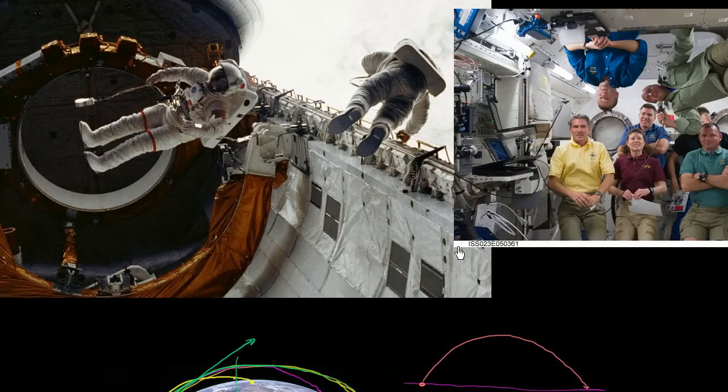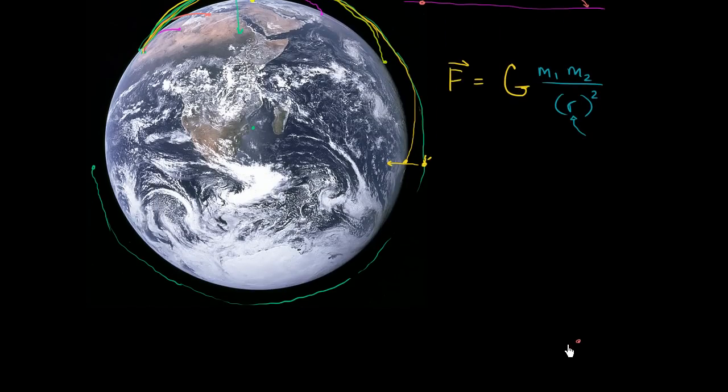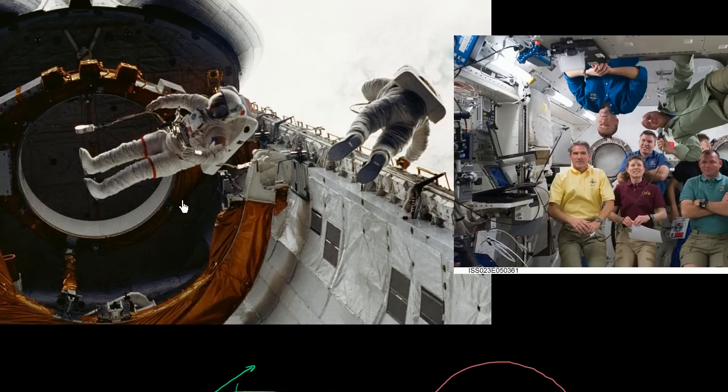But that is an indistinguishable feeling from if you were just in deep space and you weren't anywhere close to any noticeable mass. That is an identical feeling that you would feel to having no gravitational force around you. So hopefully that clarifies things a little bit. To someone who's just sitting in the space shuttle and if they had no windows, there's no way of them knowing whether they are close to a massive object and they're just in free fall around it, they're in orbit, or whether they're just completely far away from any massive object and they really are in a place where there's very little gravity.